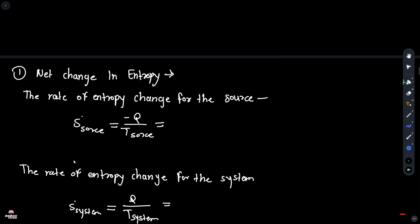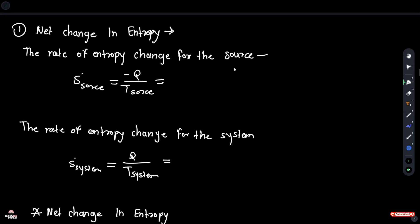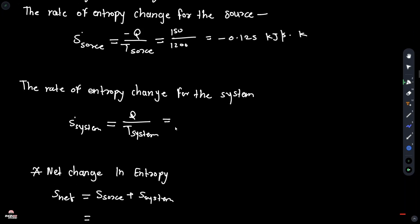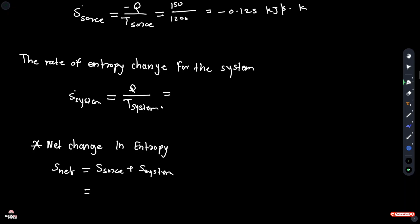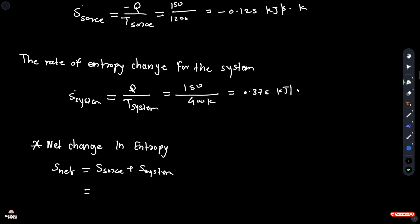To find net change in entropy: the rate of change of entropy for the source, S_source, is equal to minus Q upon T_source, which is minus 150 divided by 1200 K, equal to minus 0.125 kJ per second per K. Next, the rate of entropy change for the system, S_system, is equal to Q divided by T_system: 150 divided by 400 K, equal to 0.375 kJ per second per Kelvin.